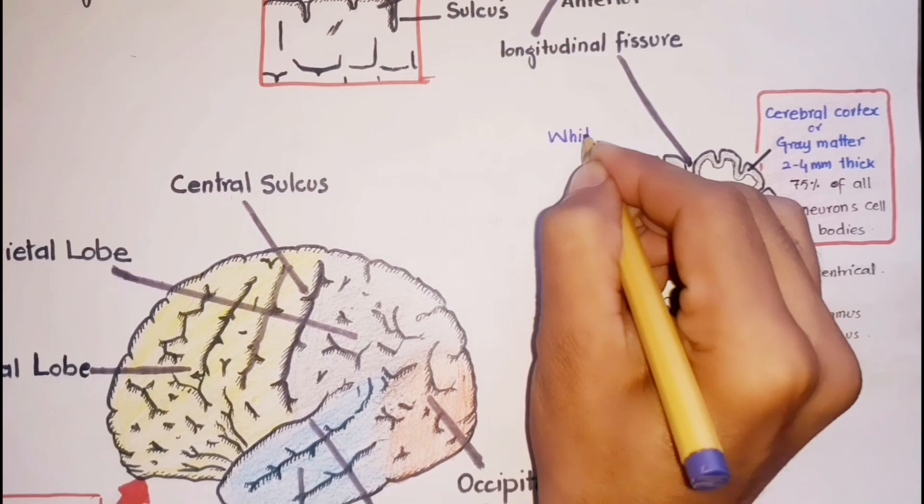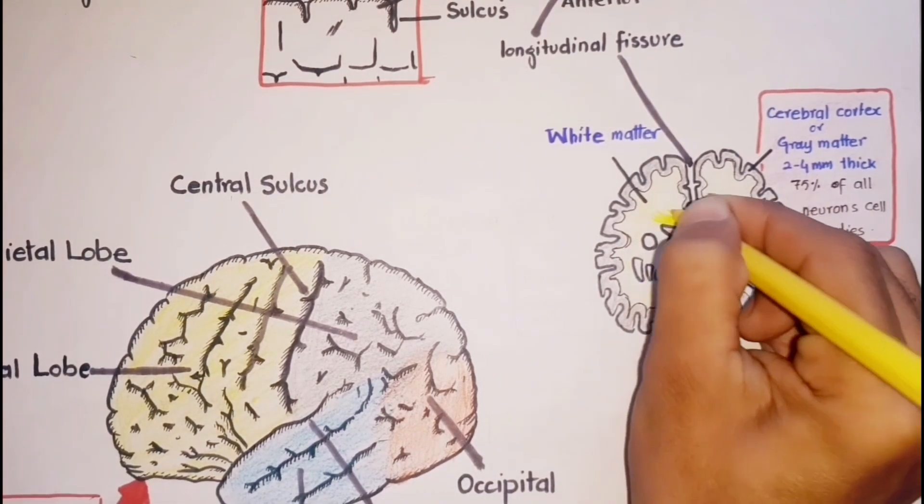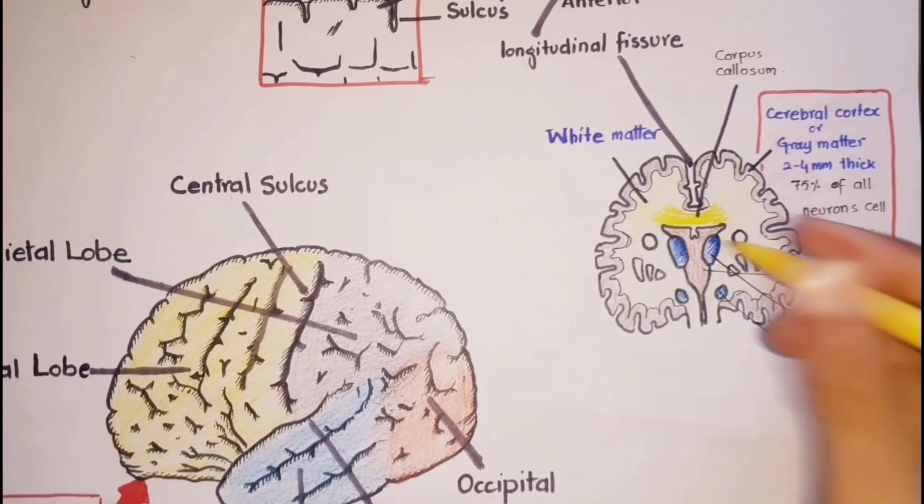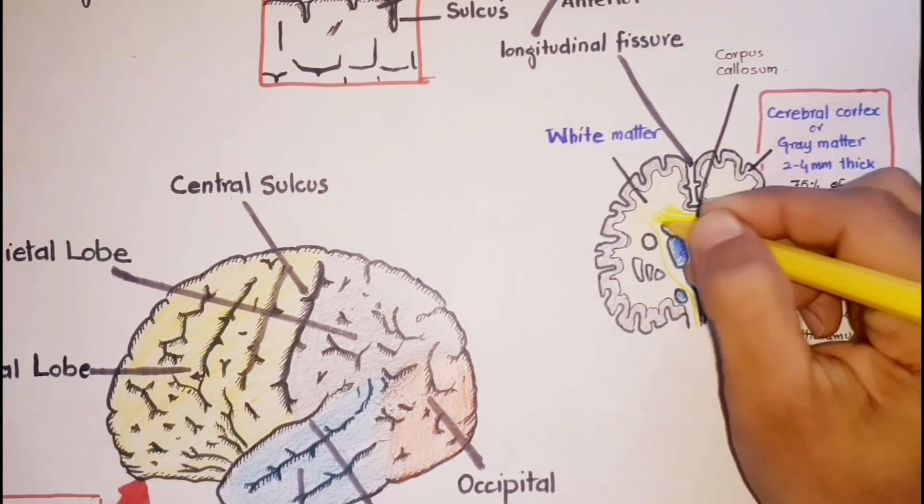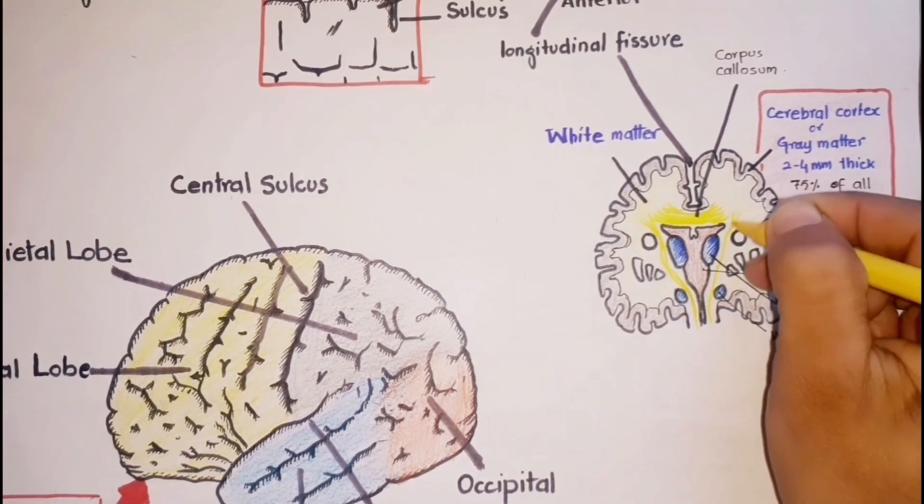Just beneath the cerebral cortex is a mass of white matter that makes up the bulk of the cerebrum. This mass contains bundles of myelinated axons that connect neuron cell bodies of the cortex with other parts of the nervous system. Some of these fibers pass from one cerebral hemisphere to the other by way of the corpus callosum, and others carry sensory or motor impulses from parts of the cerebrum to nerve centers in the brain or spinal cord.